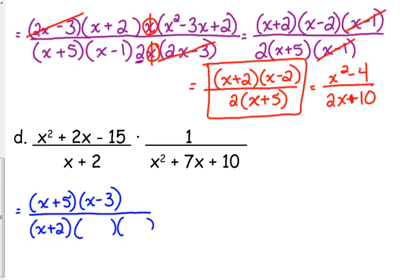Second denominator would be x plus 5 times x plus 2. 5 times 2 is 10, 5 plus 2 is 7. So, x plus 5 in the numerator and in the denominator, and that's it.